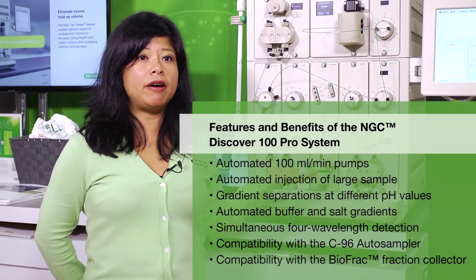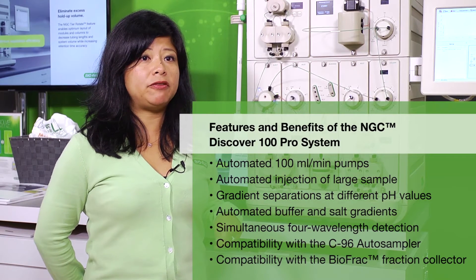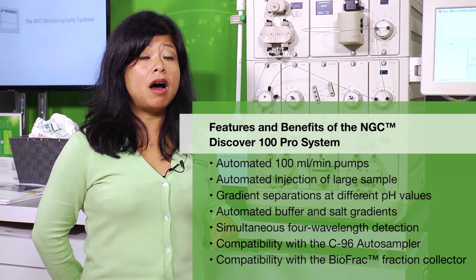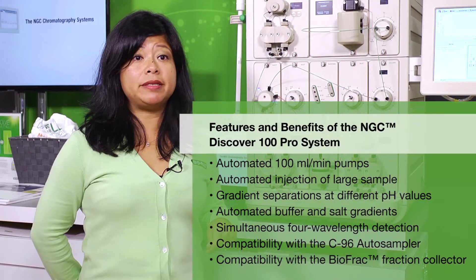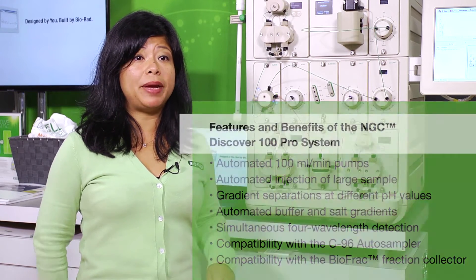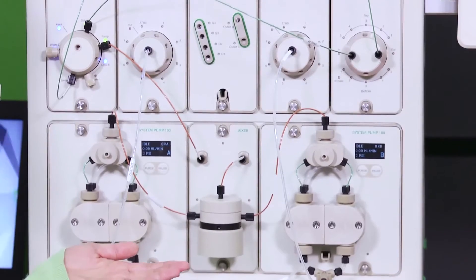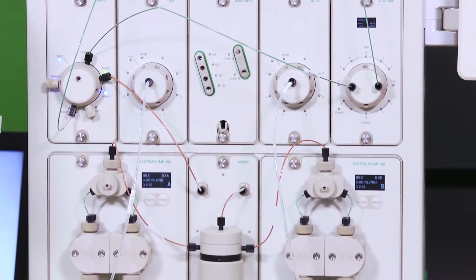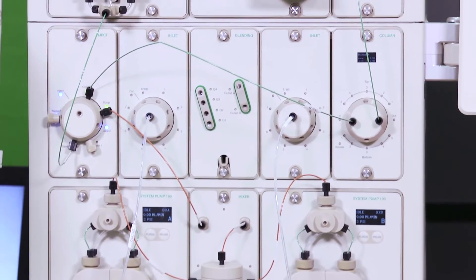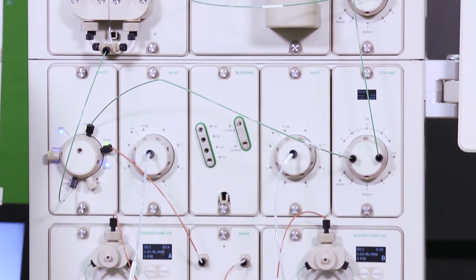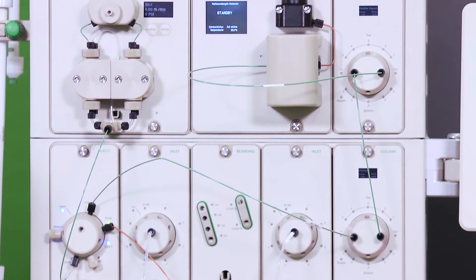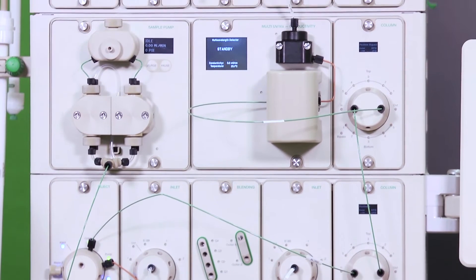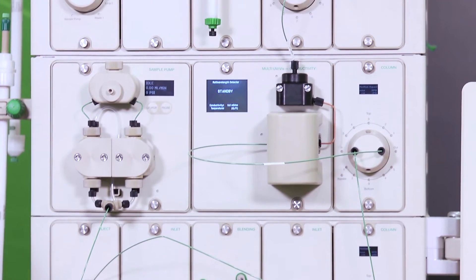The buffer blending valve along with the pH valve can also be used to automate optimization of various methods. You can automate buffer creation with the buffer blending valve and screen different pH levels to see at what optimal pH your protein of interest will elute.